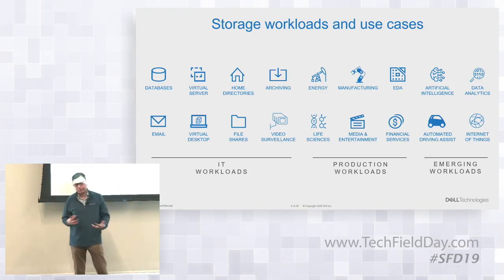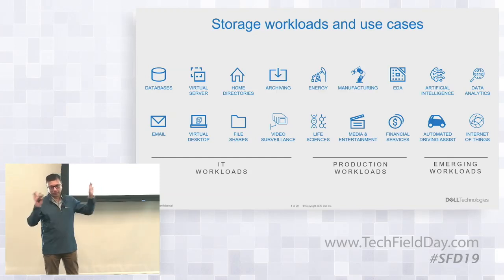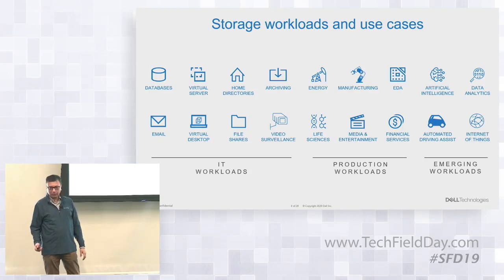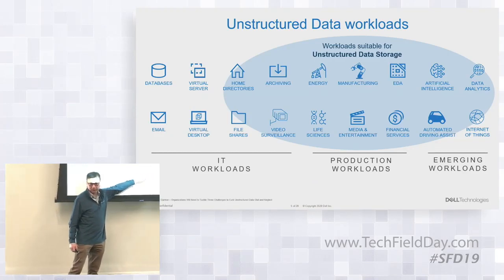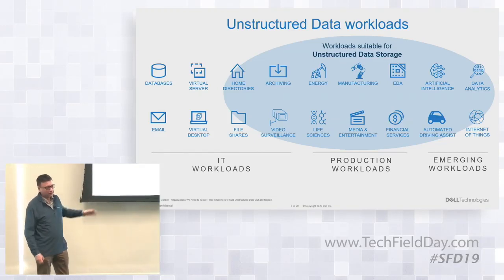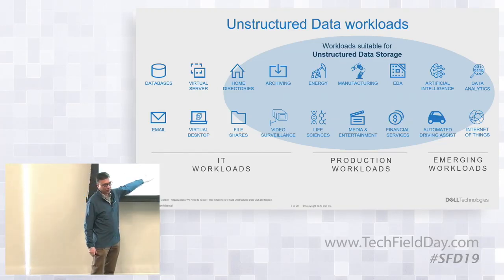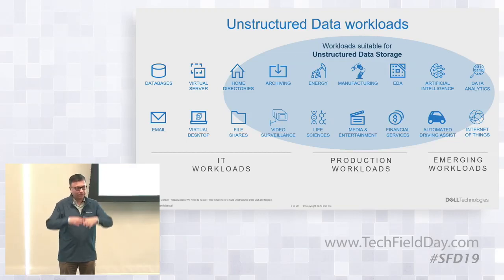And then we have some emerging workloads, such as automated driving assist, AI, ML, and so on. So broadly classifying it into these three buckets. When I talk about unstructured, it basically spans all of these production workloads, most of the emerging workloads, and some of the IT workloads. Basically anything dealing with files or objects — that's what we call unstructured data.